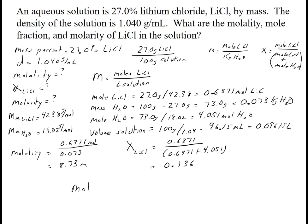The last one is molarity: 0.6371 moles of LiCl divided by the volume of solution in liters, 0.09615, gives 6.63 molar. That's an example of unit conversions to find all three concentration units.